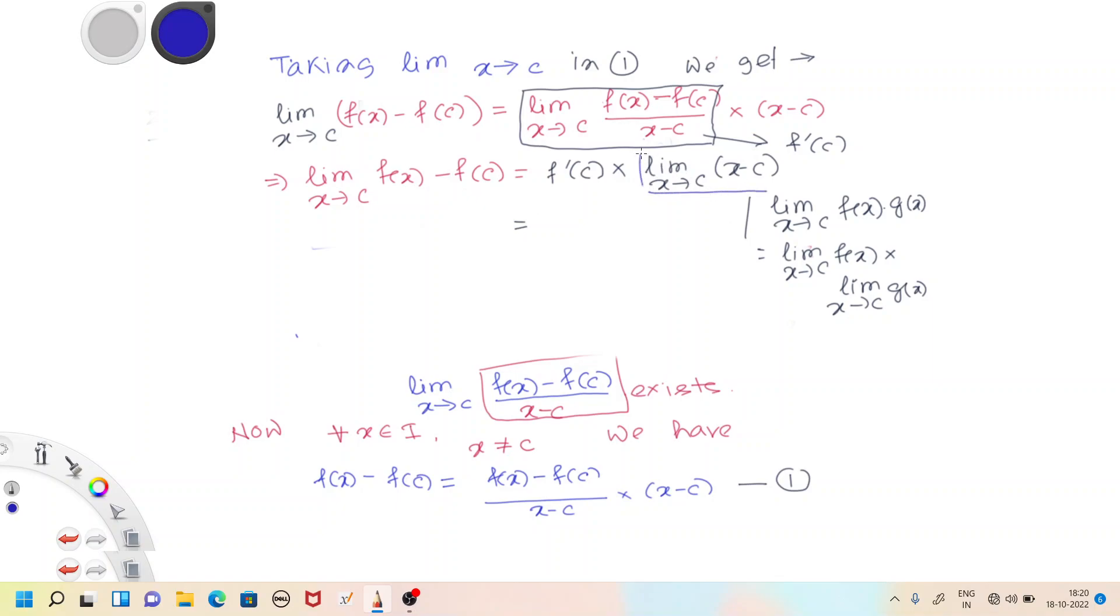Therefore, limit x approaches to c of f(x) equals f(c). This shows that the function f is continuous. From here we can conclude the function is continuous, and the proof is done.